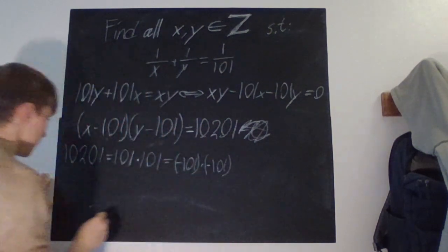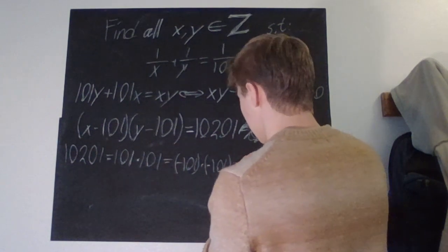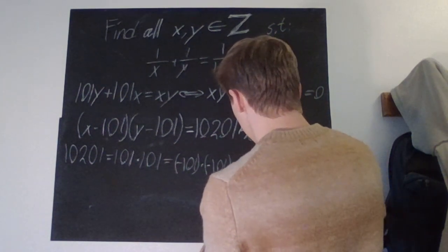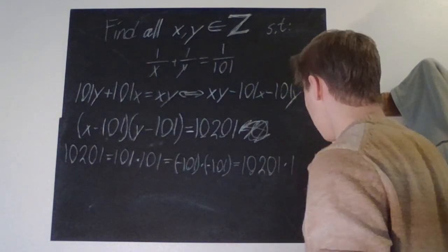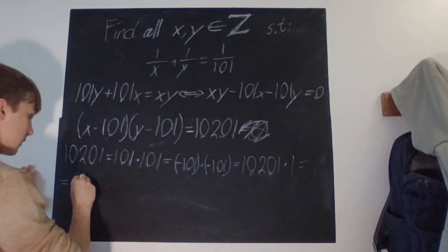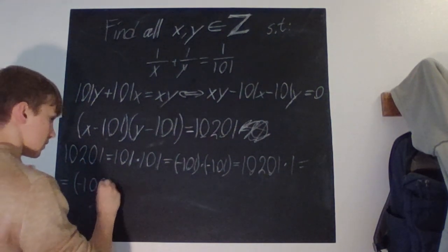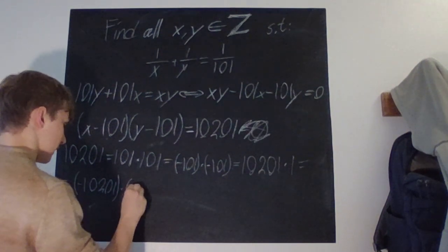And we can write that it's, well obviously, it is the same as 10201 times 1, which is also, you have to count the negatives, which is also the same as -10201 times 1.